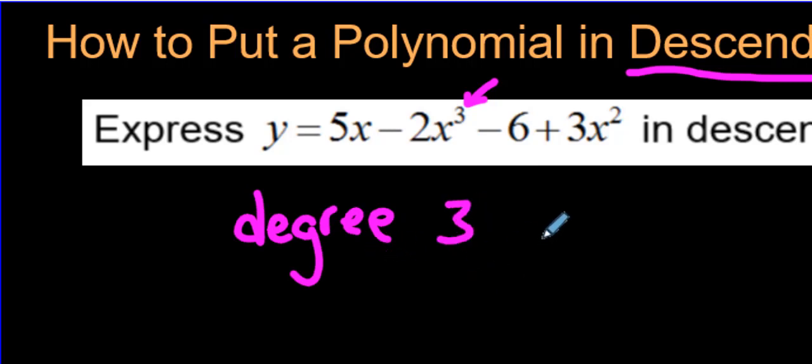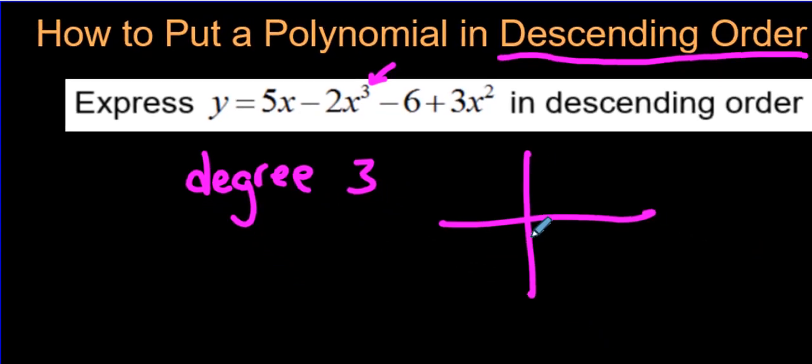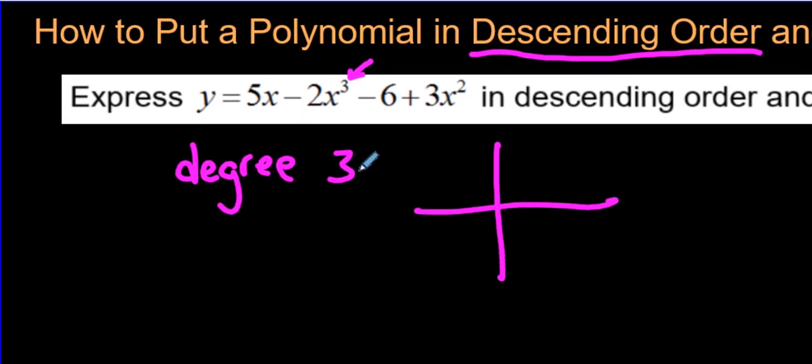And we learned in the last video about basic shapes of polynomials that when something is of degree 3 or a degree that is odd, they're all going to start in this quadrant here, make their way over here, and then end up going up to the right.